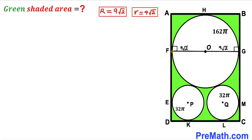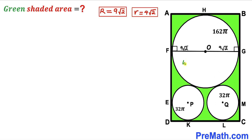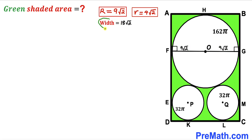The whole diameter FG represents the width of the rectangle. So the width equals 9√2 + 9√2 = 18√2. Thus the width of rectangle ABCD is 18√2.